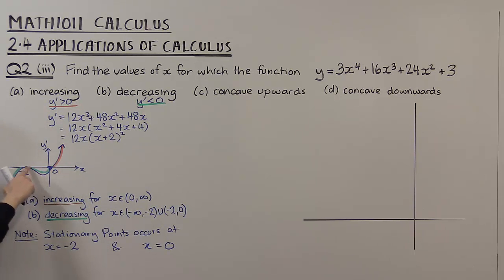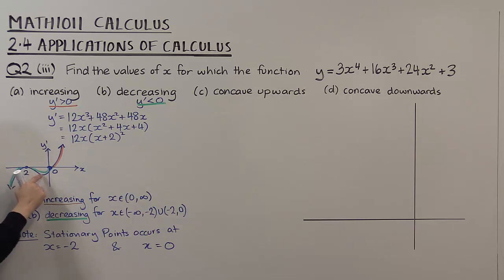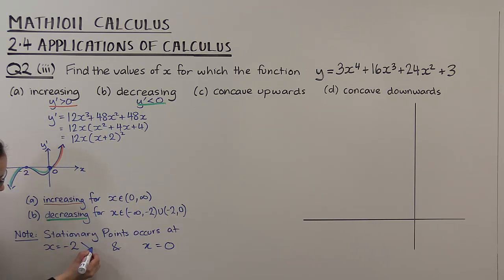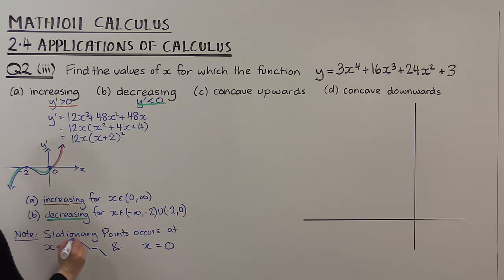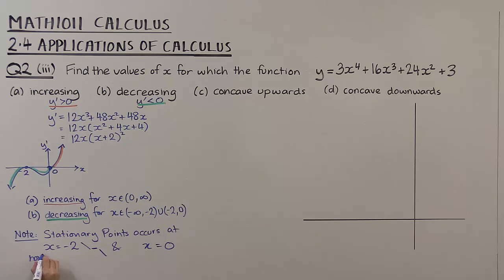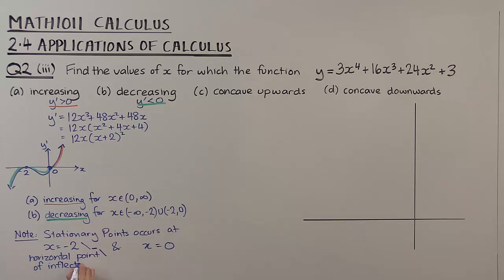What's happening at minus 2? Well, y' is negative either side of minus 2 — it has a negative y' value on both sides. So at minus 2 the gradient looks like: negative, then flat, then negative. That means at x equals minus 2, we have a horizontal point of inflection, because the gradient is negative on either side.